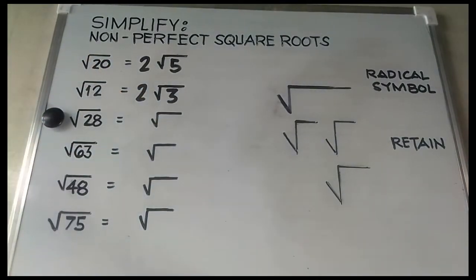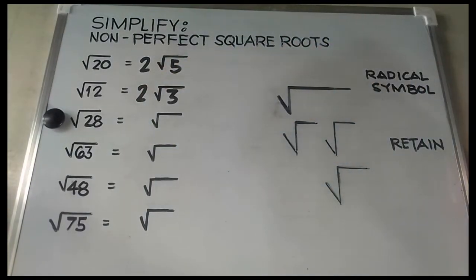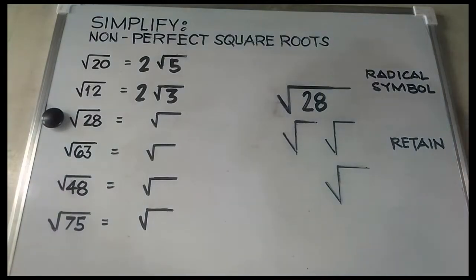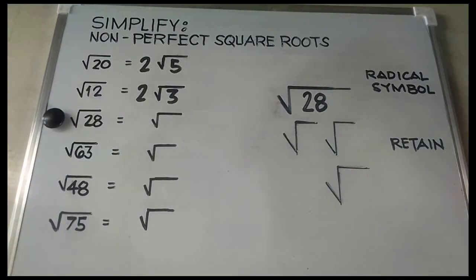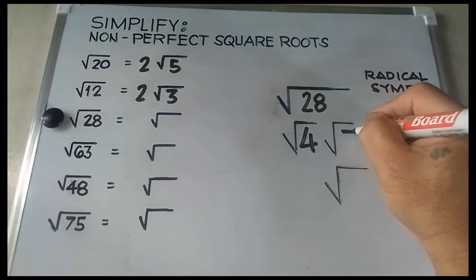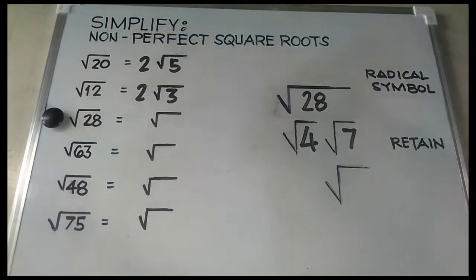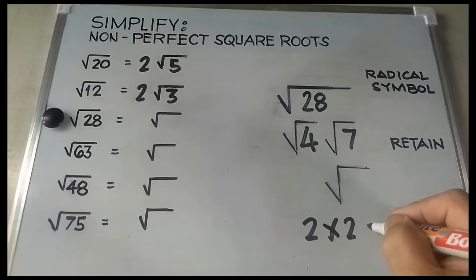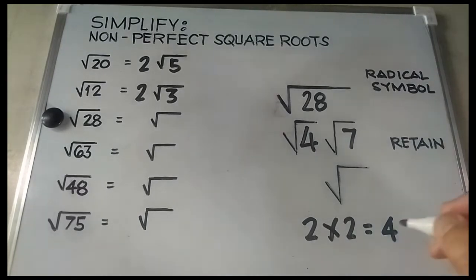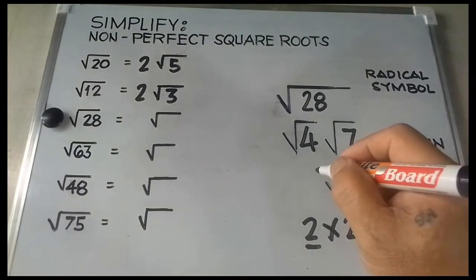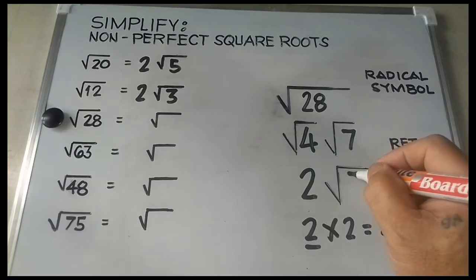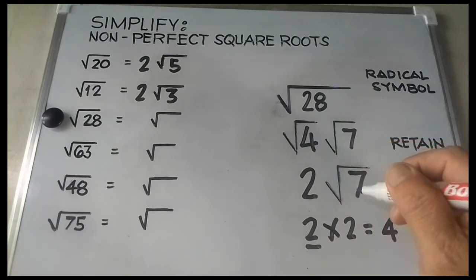Next: square root of 28. 28 is a non-perfect number, so let's place it inside the radical symbol. Think of a number you can multiply to get 28 — that would be 4 times 7. Then factor out 4: that would be 2 times 2, which is equal to 4. Place 2 outside the square root and retain 7 inside the square root. The square root of 28 is 2 square root of 7.